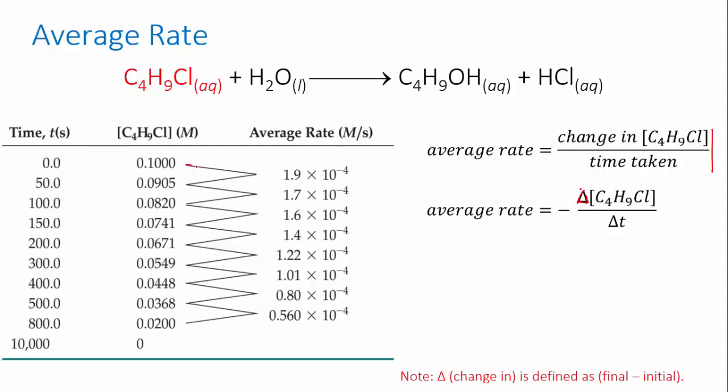So for the first two data points, the change in concentration of butyl chloride is 0.0905 minus 0.1 and the time interval is 50 seconds. This gives an average rate of 0.00019 moles per litre per second.